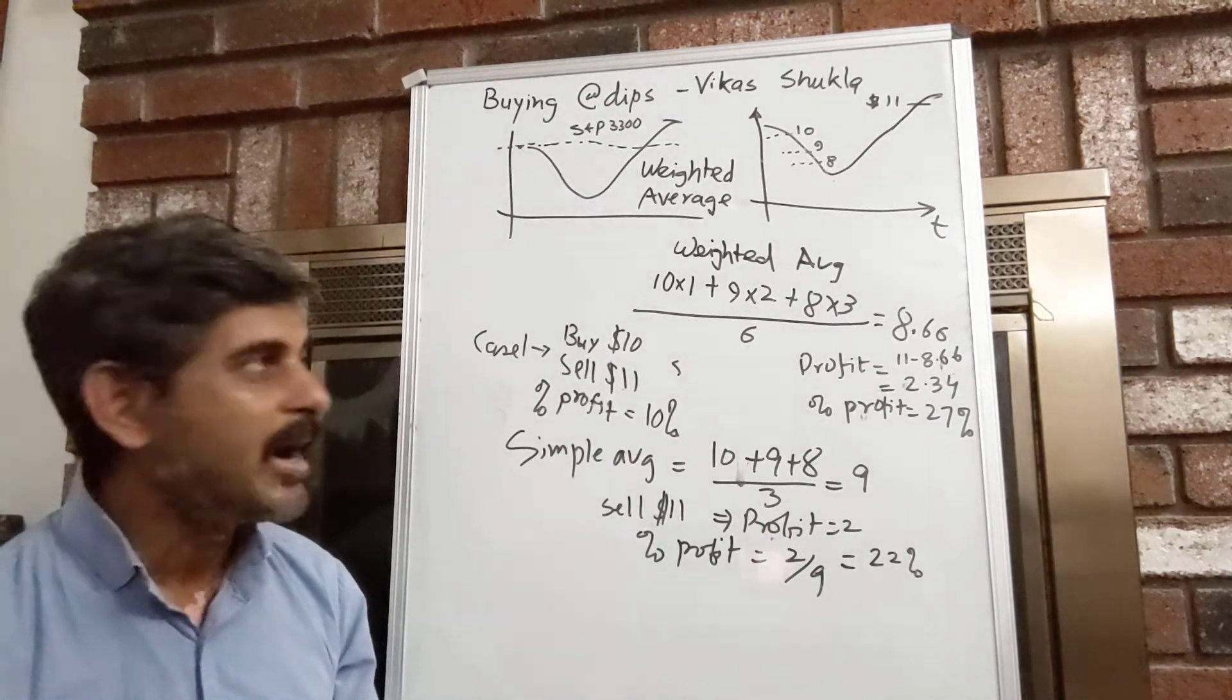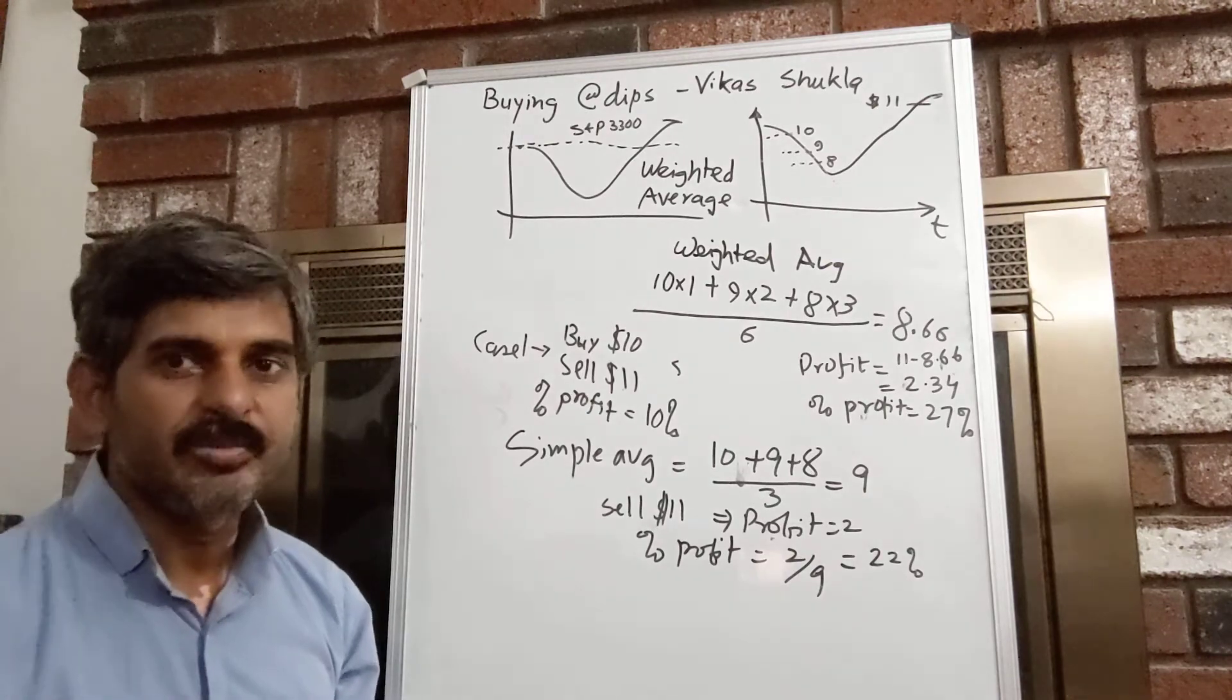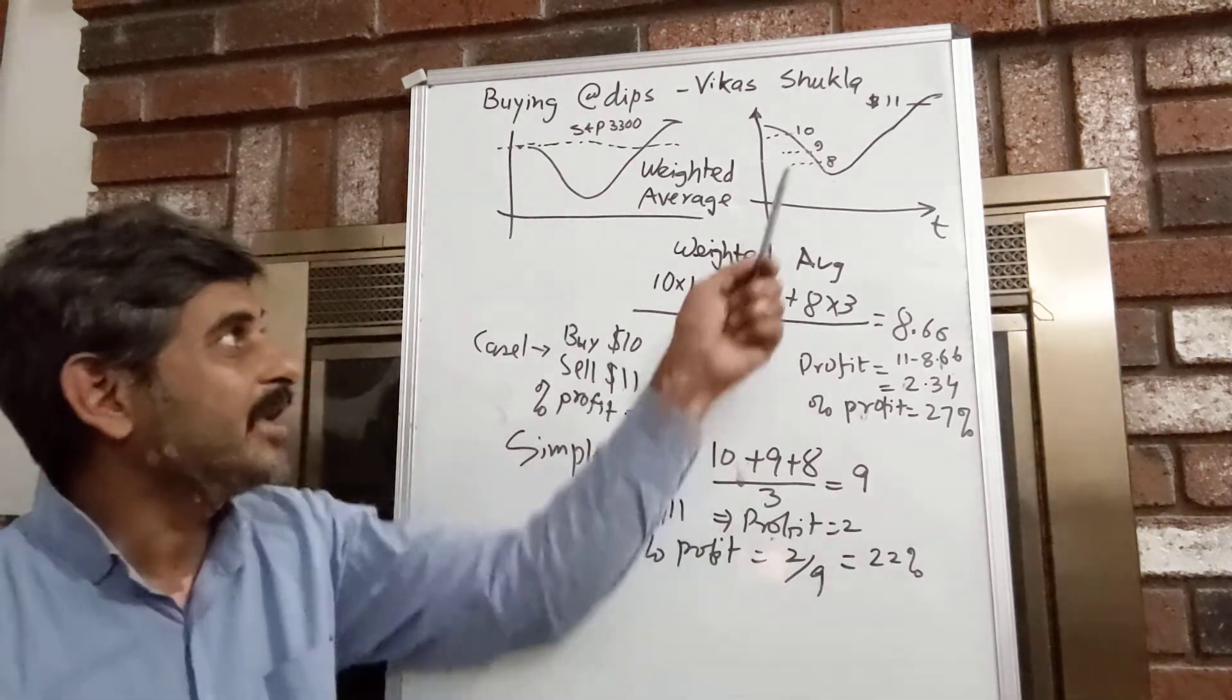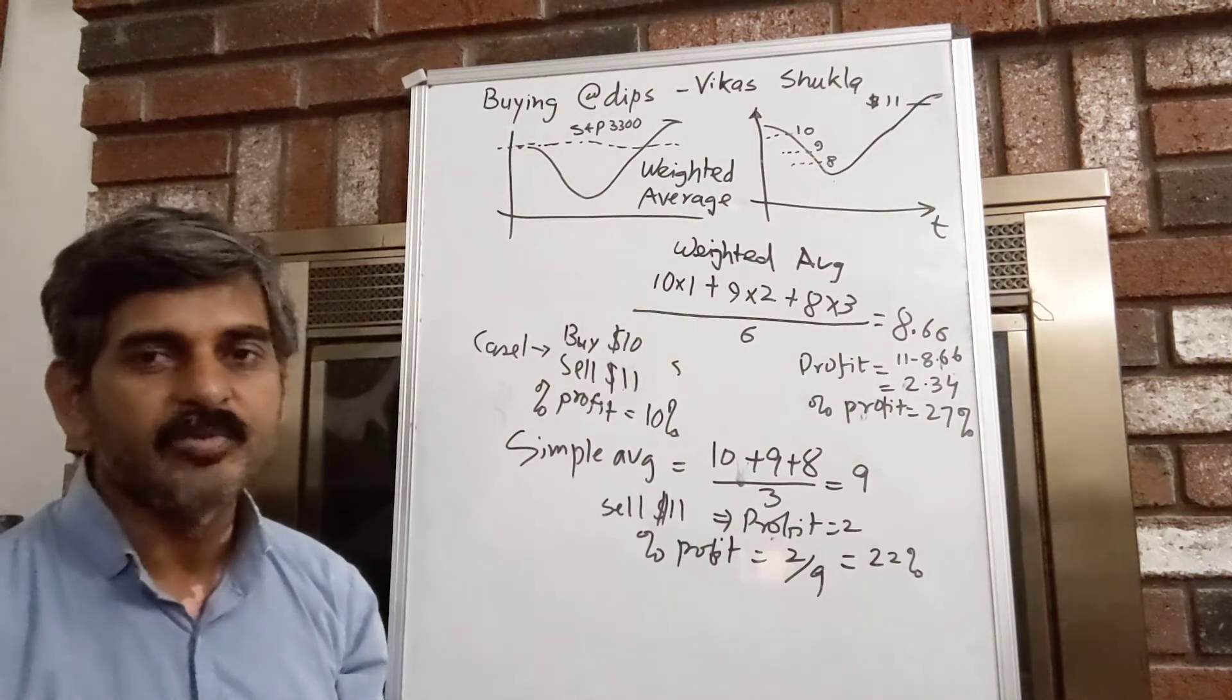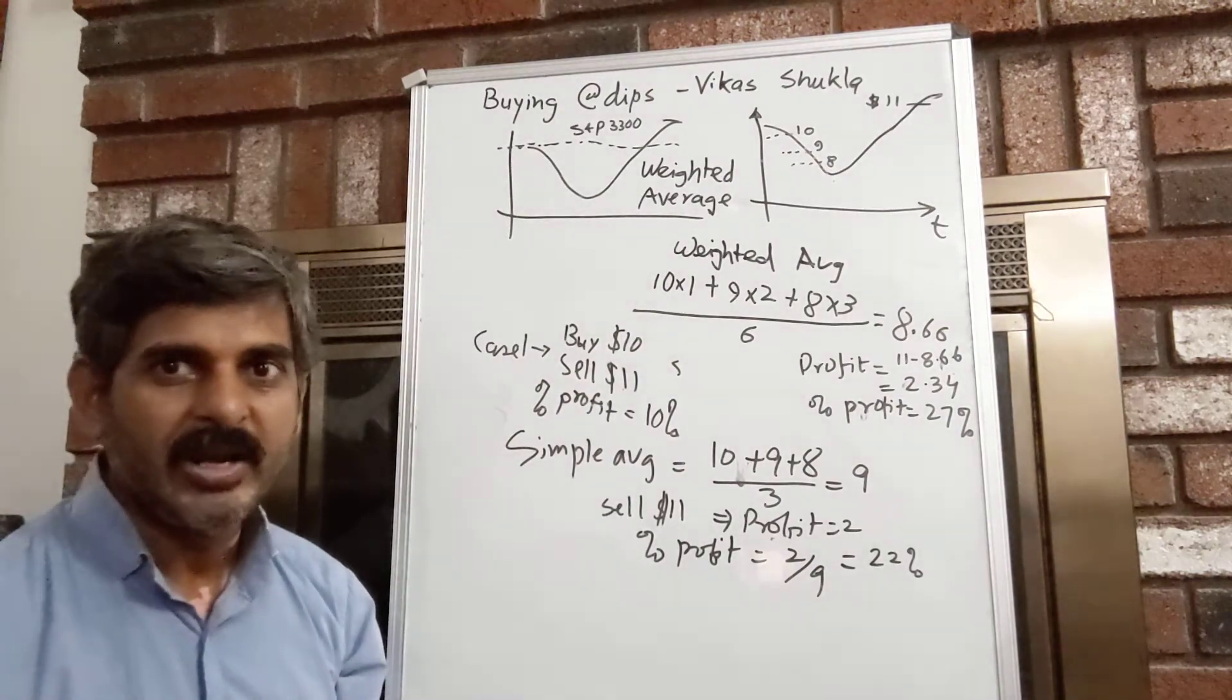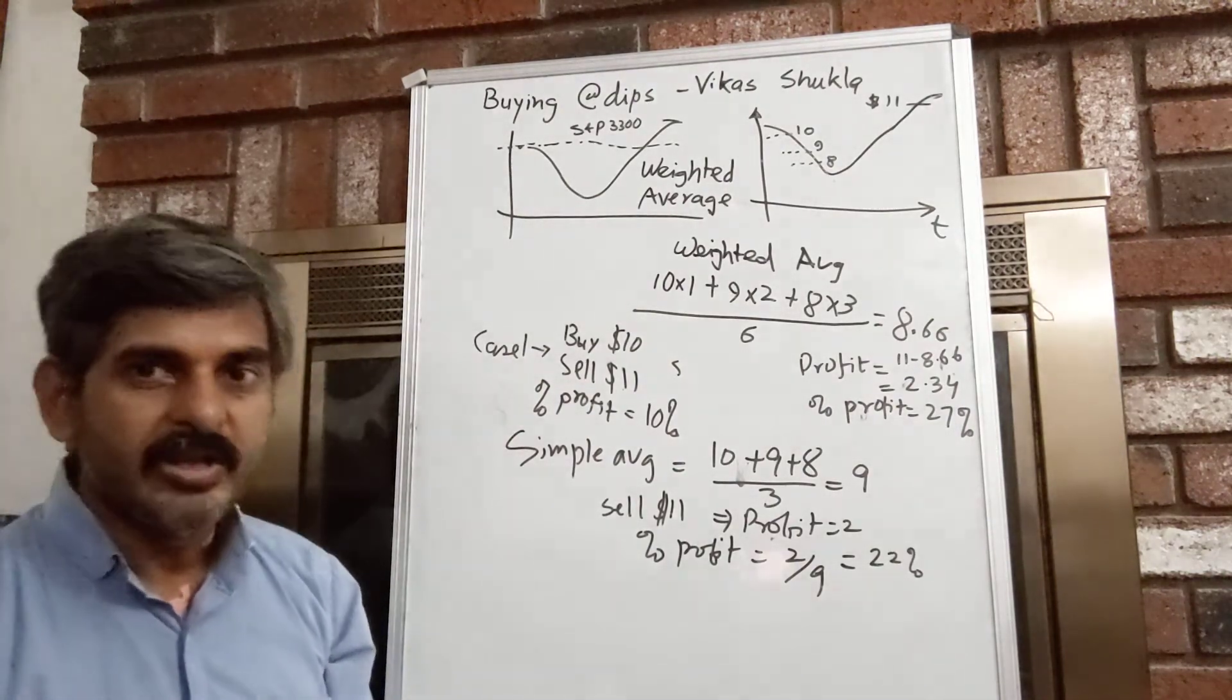And that's why you do this averaging only with the good companies you know about. They have at least some history in the past. And the second most important thing is, diversify it to at least 3 shares. If it's more than 3, even better, but at least 3.